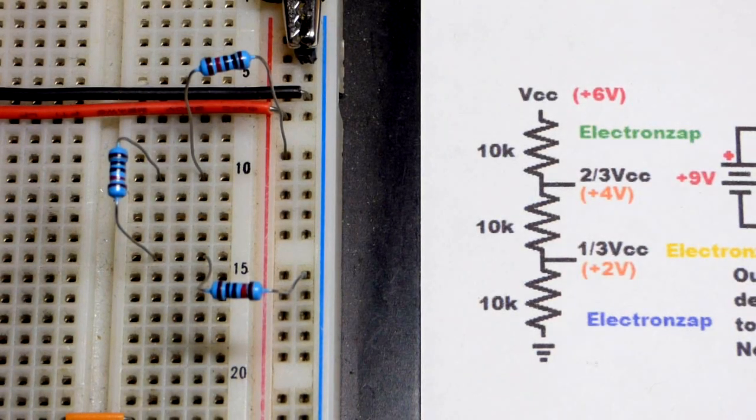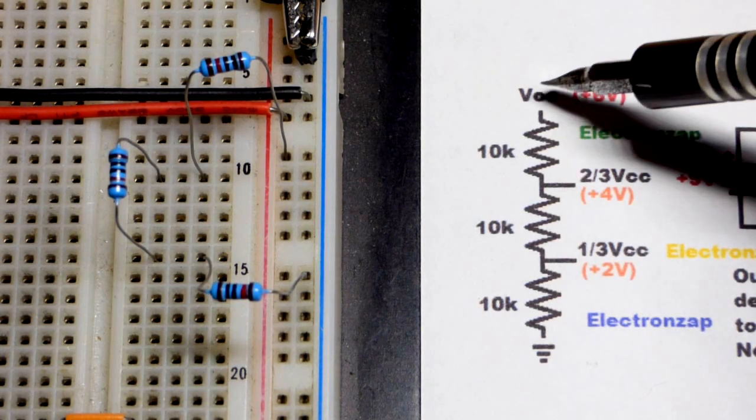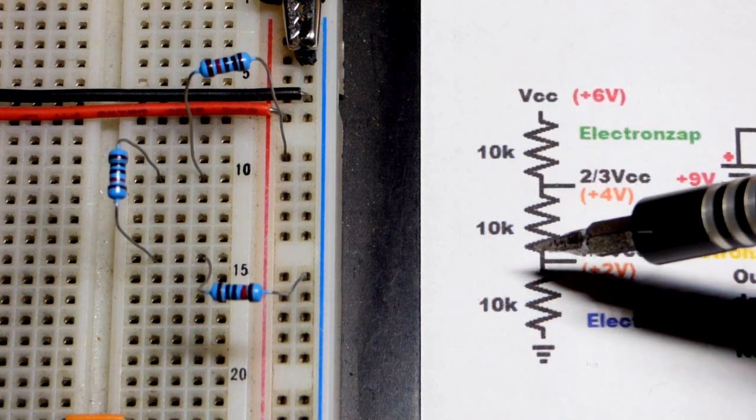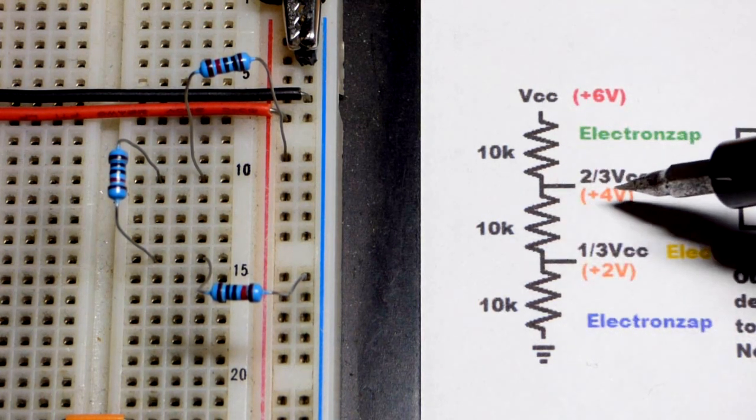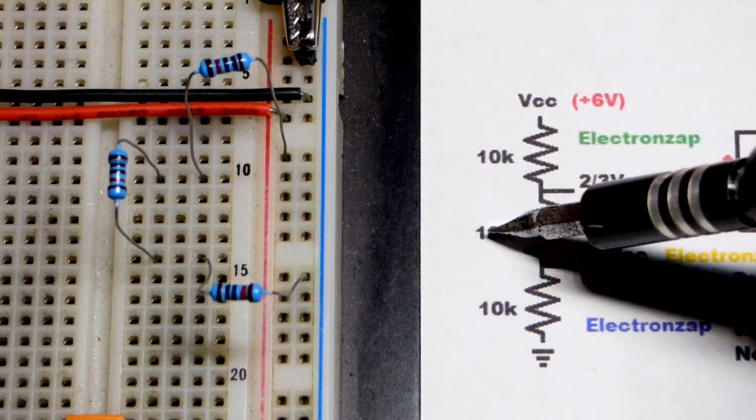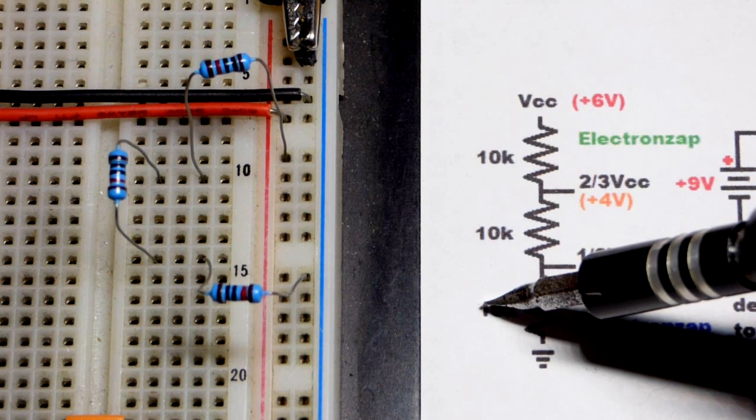In the last video we looked at how we could split a supply voltage in half with two equal value resistors. Now we're going to split the voltage into thirds, two-thirds and one-third, using equal value resistors.